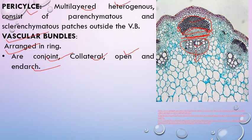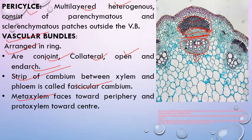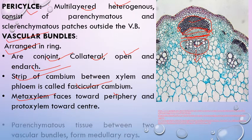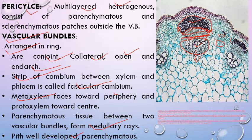Summary: conjoint means xylem and phloem lie on the same radius; collateral means xylem and phloem lie side by side; open means cambium is present between xylem and phloem; endarch means protoxylem faces the pith. The strip of cambium present between xylem and phloem is known as vascular cambium, making this an open vascular bundle. Between the two vascular bundles, parenchymatous cells form ray-like structures called medullary rays. The pith is well-developed, parenchymatous, made of thin-walled large cells.